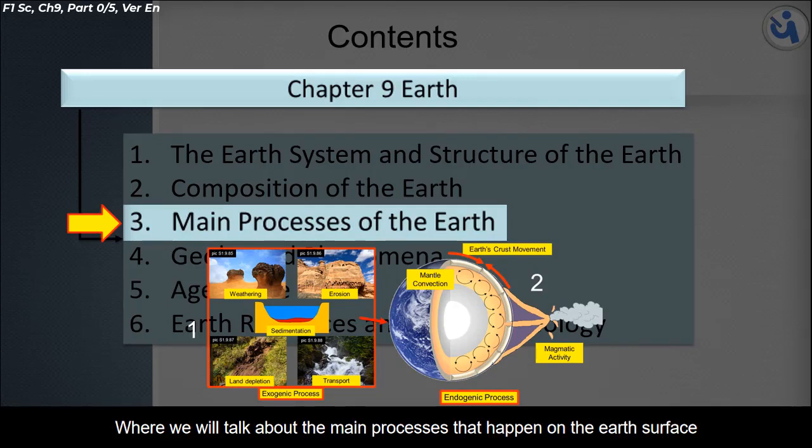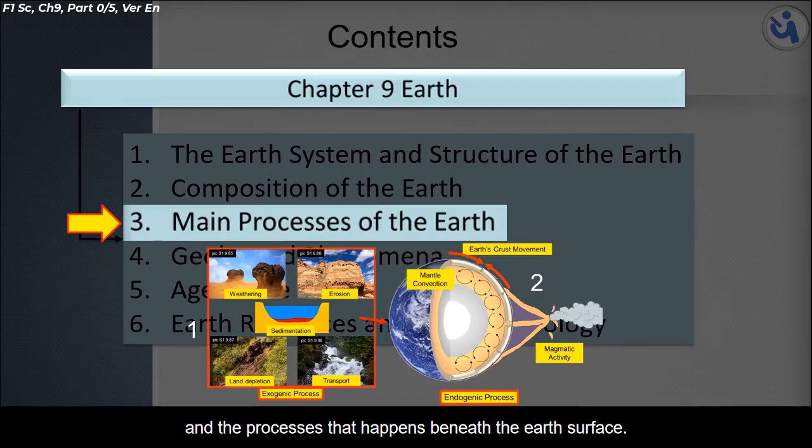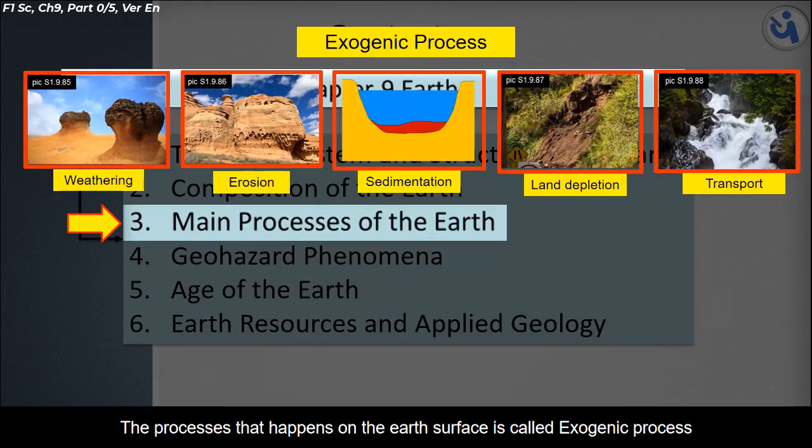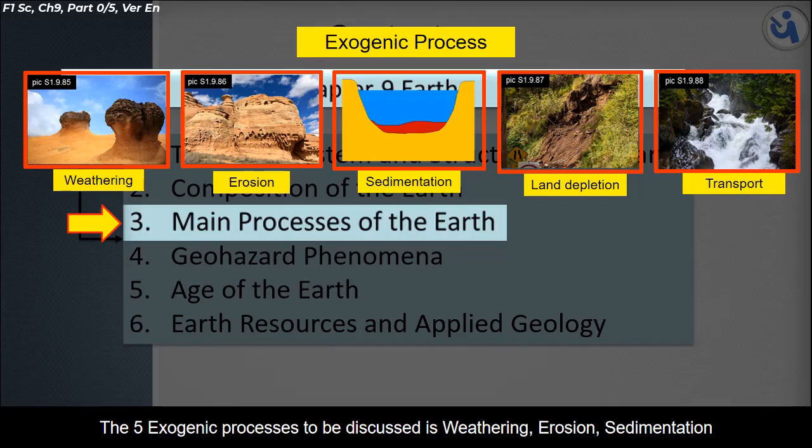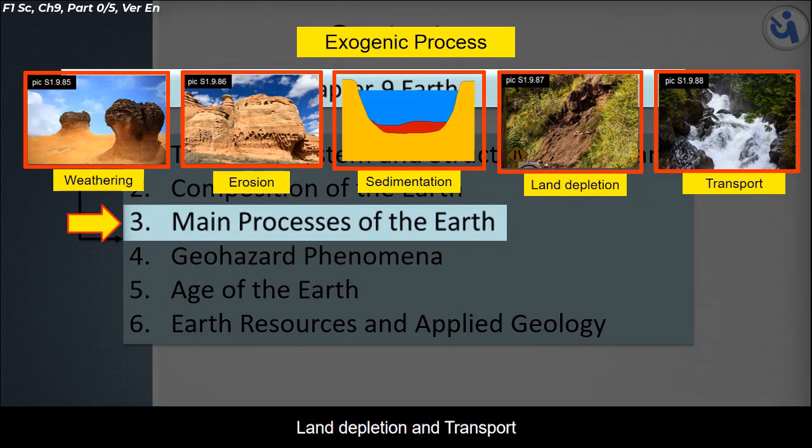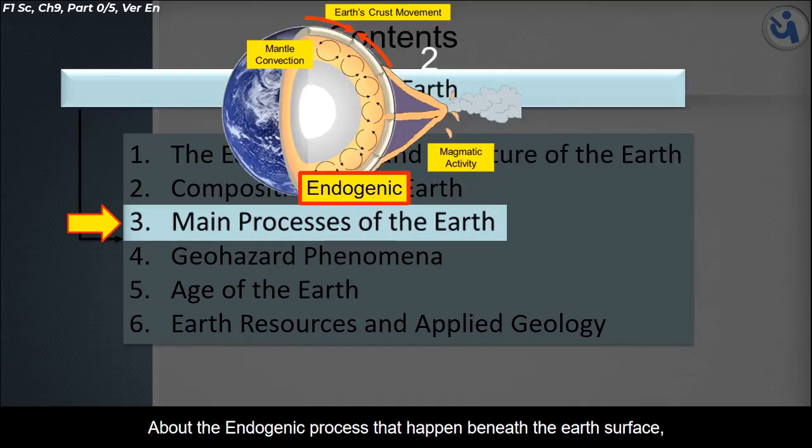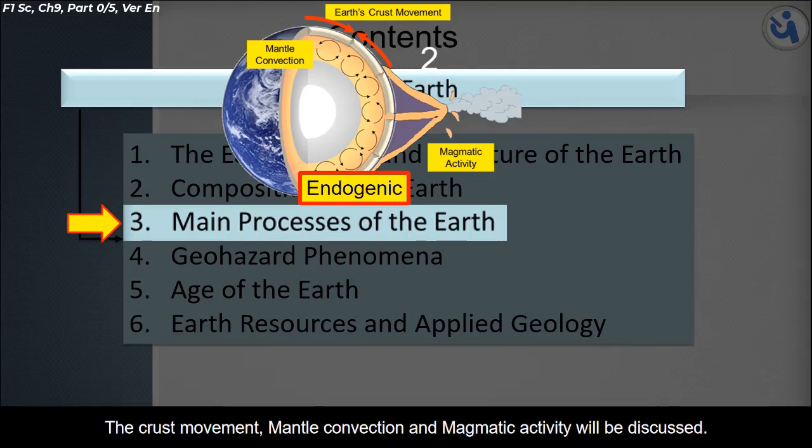The third topic is main processes of the Earth. The processes that happen on the Earth's surface are called exogenic processes: weathering, erosion, sedimentation, land depletion, and transport. The endogenic processes that happen beneath the Earth's surface include crust movement, mantle convection, and magmatic activity.